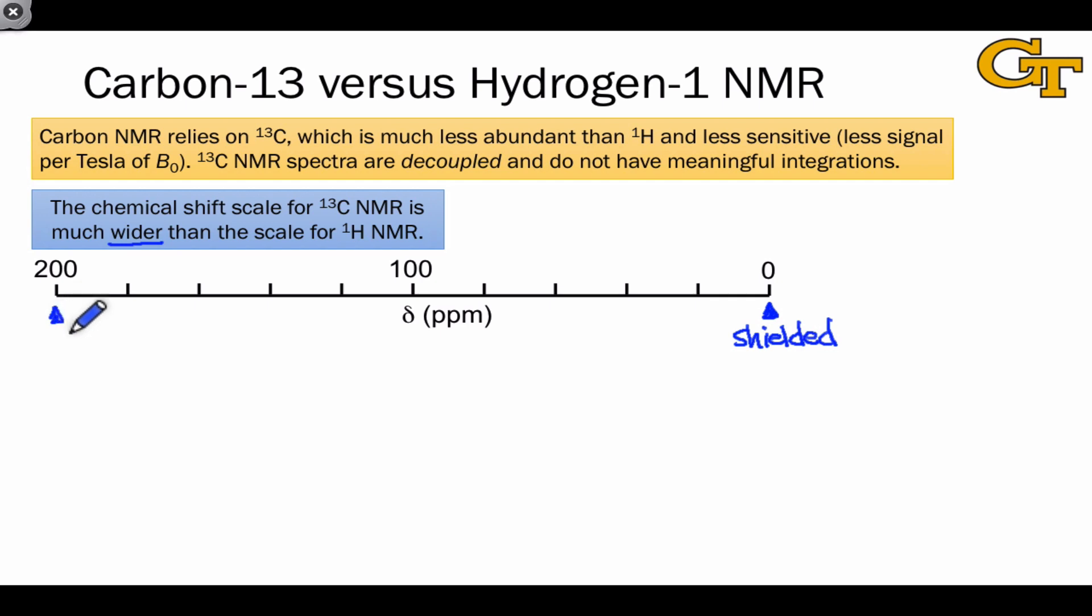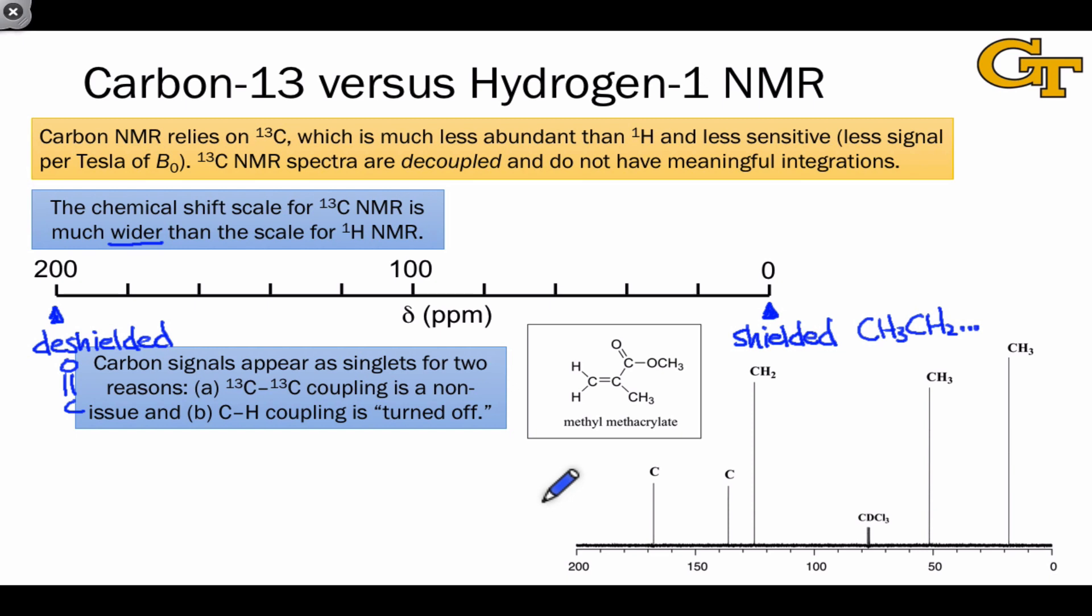The scale runs up to about 200 at the high deshielded end of the range. Around 0 ppm is typical for alkyl protons, for example, CH3, CH2, etc. And on the highly deshielded end, among the most deshielded carbons are carbonyl carbons that we find in the CO double bond.